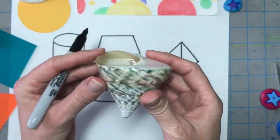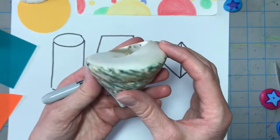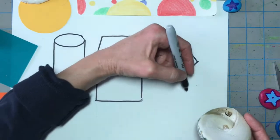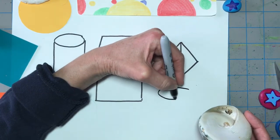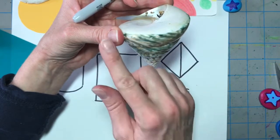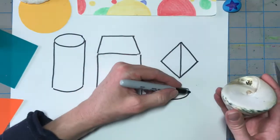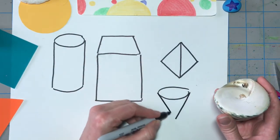Our next shape is our cone. We're going to start with the oval at the top. So we'll draw an oval. And to create the bottom, we'll make two diagonal lines like the letter V. One, two.